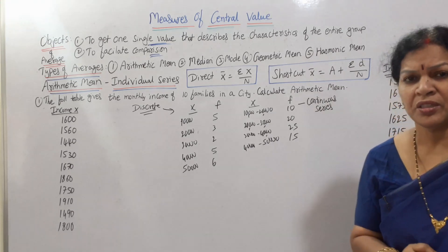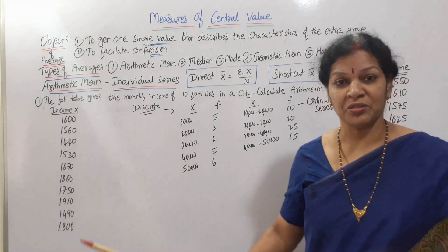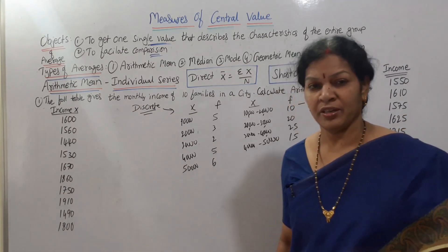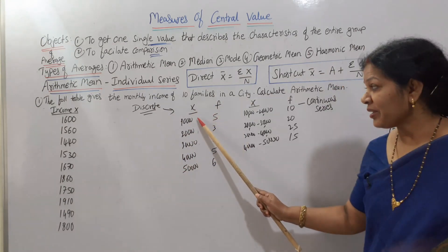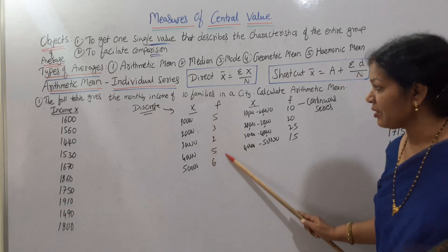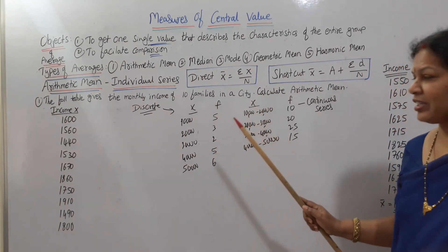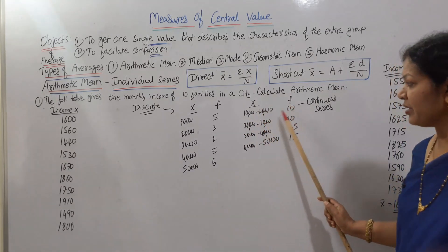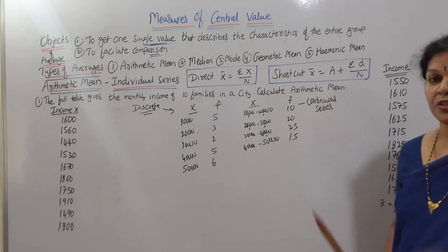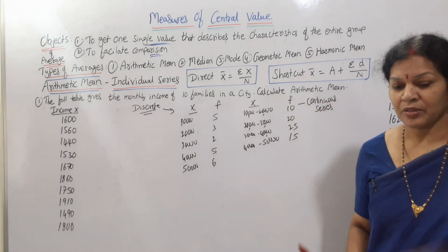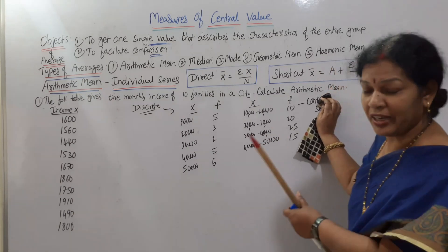Are you able to identify the difference? Individual series means only income is given for particular people — how many people are drawing is not given, just the total count, say 10 members. Discrete series means income is given along with frequency — how many people are drawing that particular income. Continuous series means income is given in class intervals like 10K to 20K, 20K to 30K, along with frequency. Today we will focus only on individual series. Discrete and continuous series will be done later, because if you learn slowly you will become perfect.